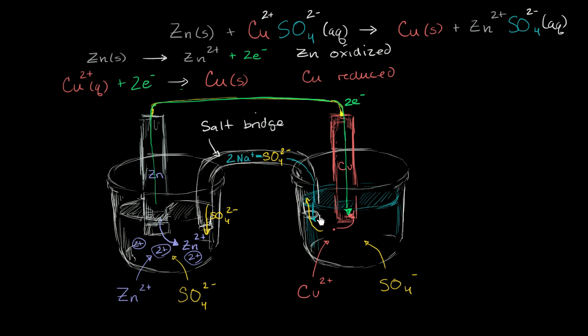In the last video, we talked about how we could create a voltaic cell or galvanic cell, or essentially a battery, by separating the oxidation and the reduction reactions and connecting them with the wire, which forces the electrons that zinc is losing to go through the wire to the copper ions so that they can get them, so that the copper ions can be reduced.